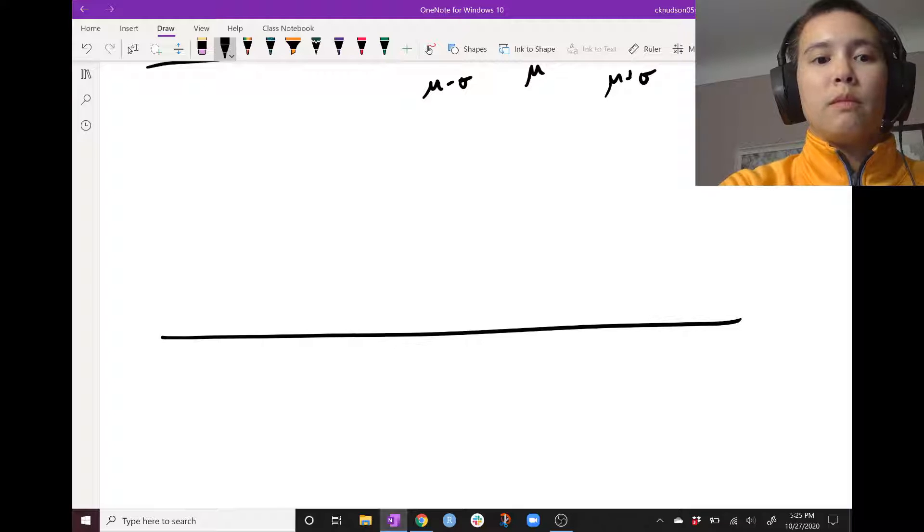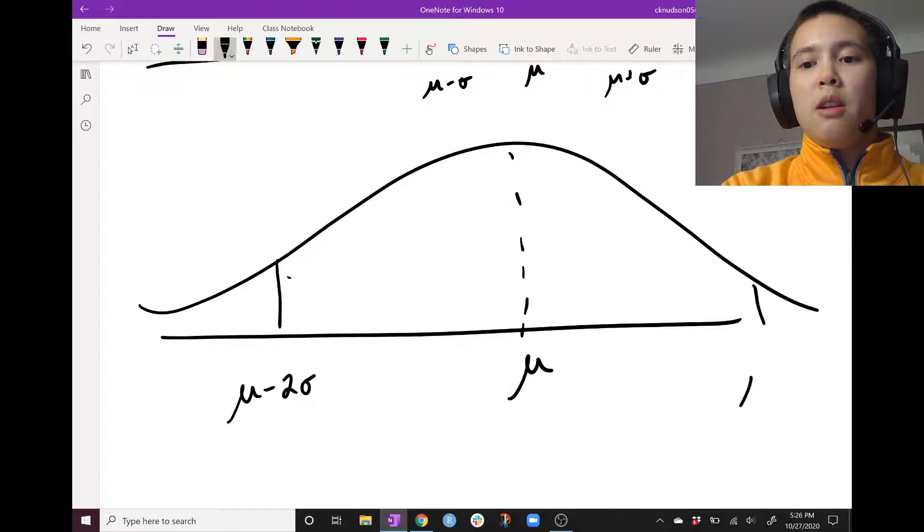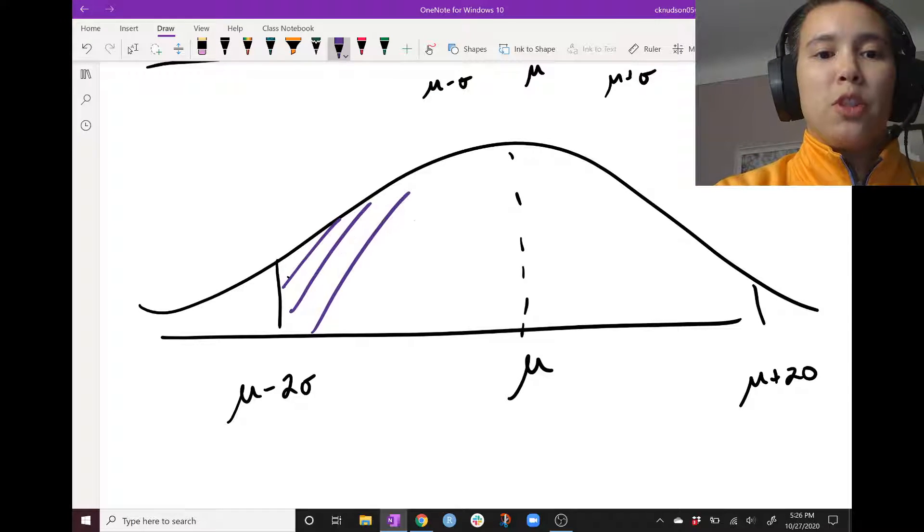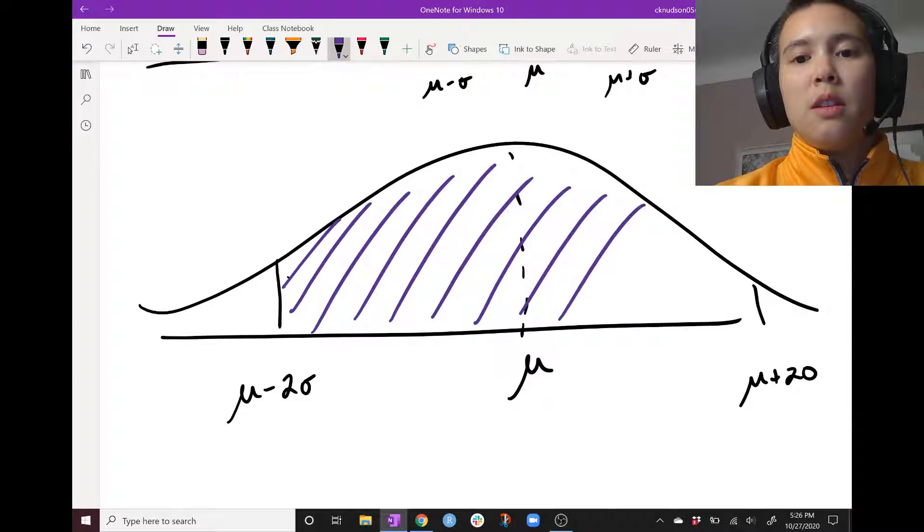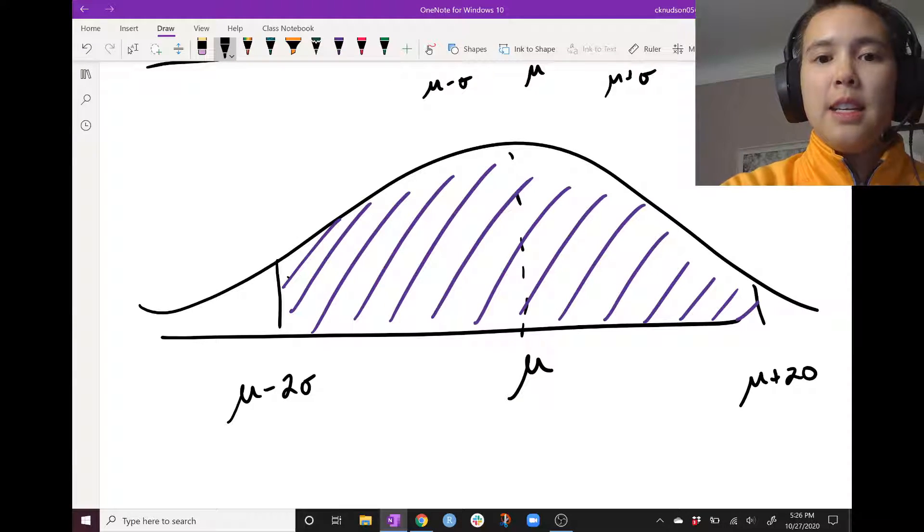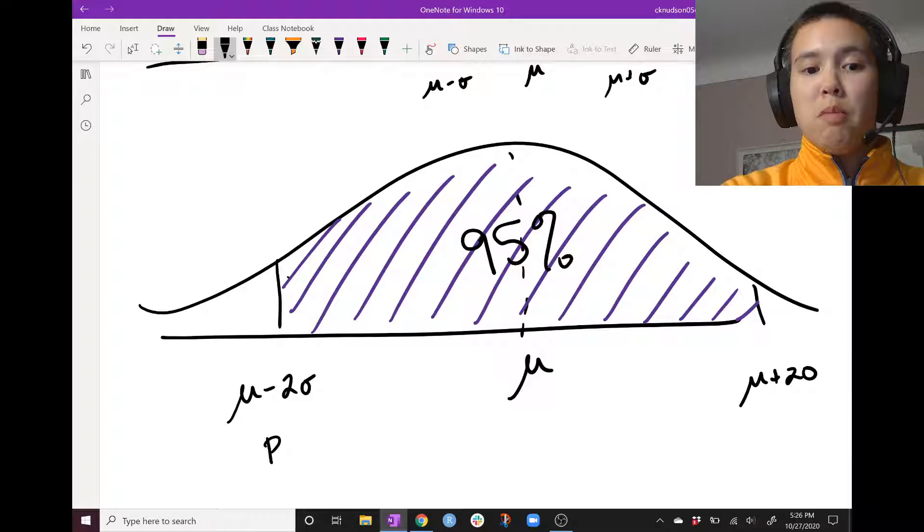Here's our normal centered at mu, and then go out two standard deviations, mu minus two sigma, mu plus two sigma, and this purple shaded region has probability 95%. So again, writing this, we could say that the probability that x is between mu minus two sigma and mu plus two sigma is about 0.95.